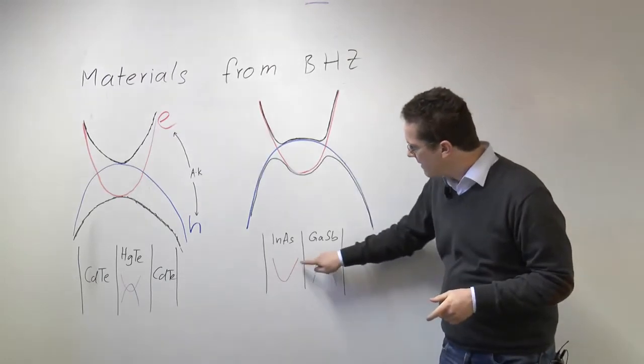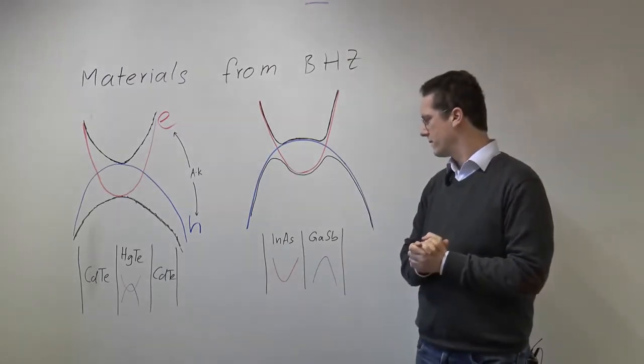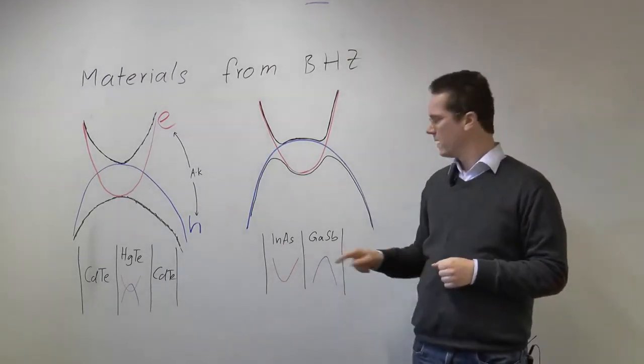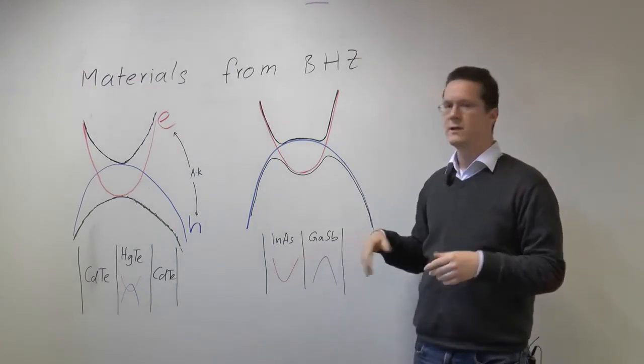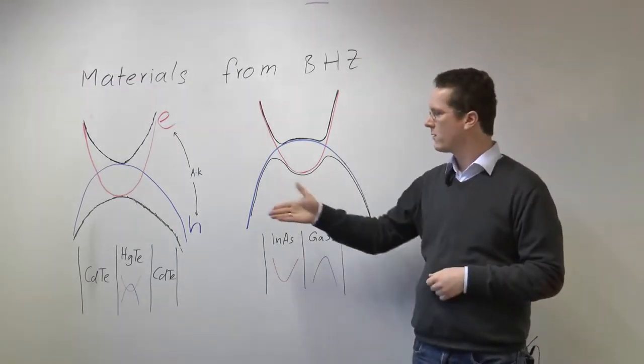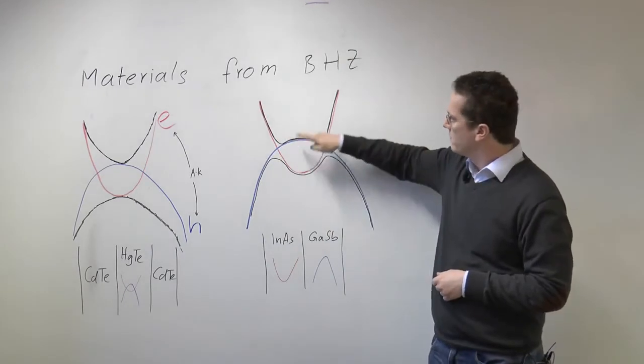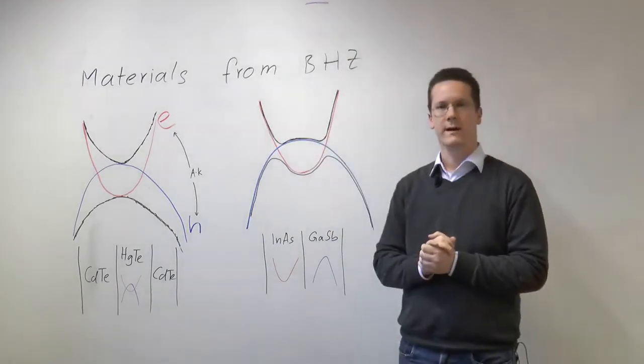Now in this case the tunneling between these two layers is giving us this k-linear coupling. Because it goes between layers it's usually less strong than in mercury telluride and the band structure will usually look like this here as drawn here.